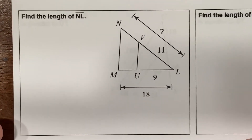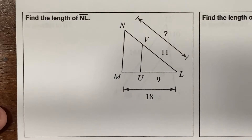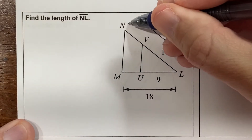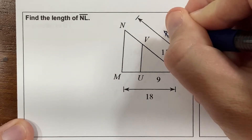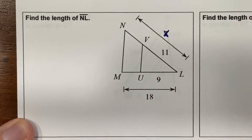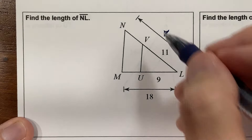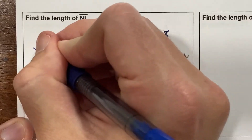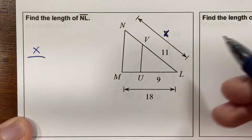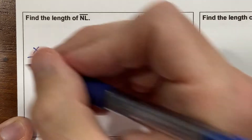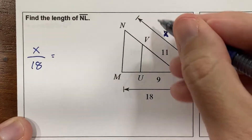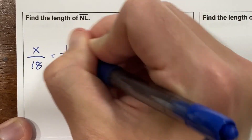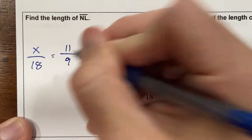Similarly, this one says find the length of NL. NL goes from there all the way down, so it wants this whole side. I'm going to make this question mark an x. This whole side x matches up over here to 18, and then on the other side, 11 matches up with 9 over here.